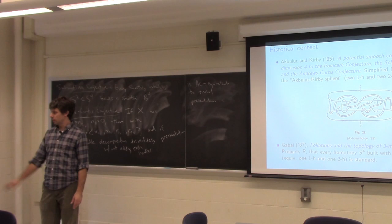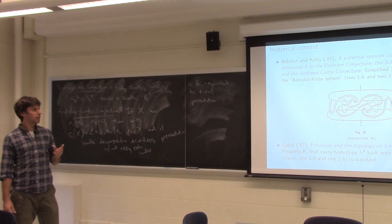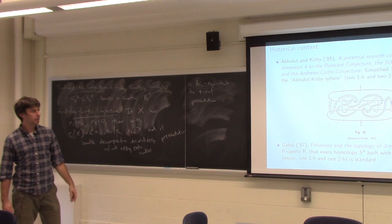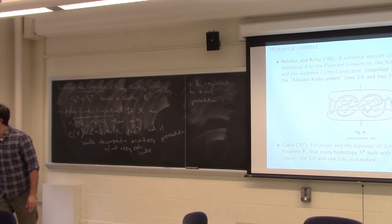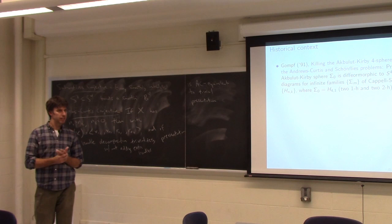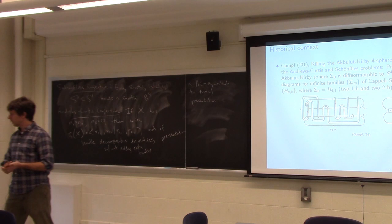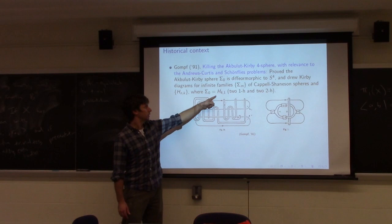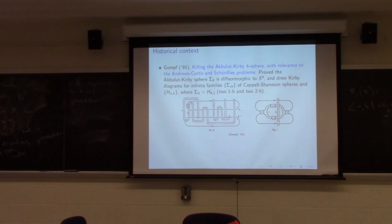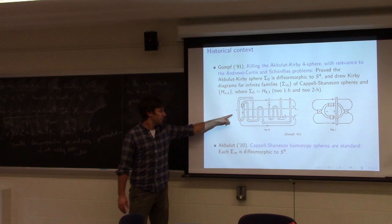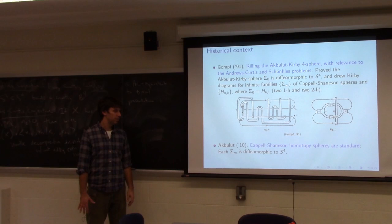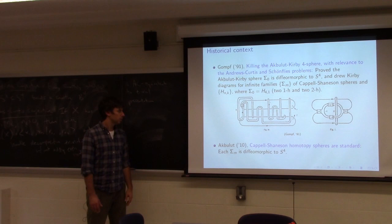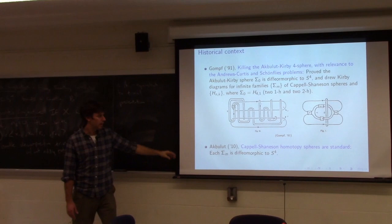Dave Gabai proved the Property R conjecture, which tells us that if a homotopy S4 has a handle decomposition with a single two-handle and three-handle, you can only do this in the standard way. Gompf proved that the Kirby-Akbulut sphere equals one of the H manifolds where n equals four and k equals one. Then almost 20 years later, Akbulut took Gompf's diagram and showed all of the Cappell-Shaneson spheres are diffeomorphic to S4.